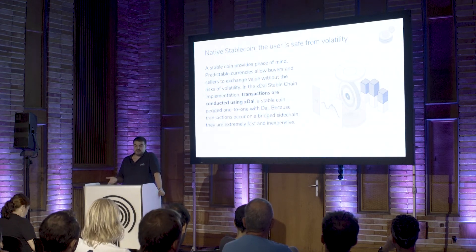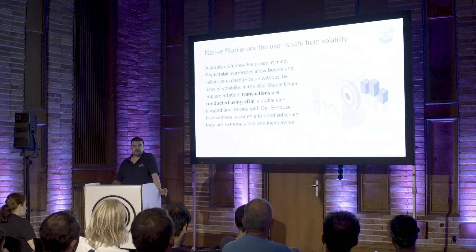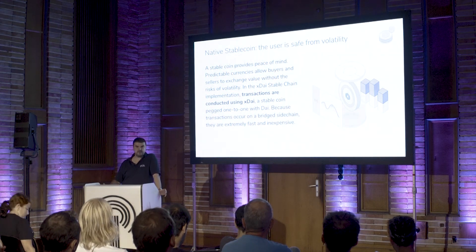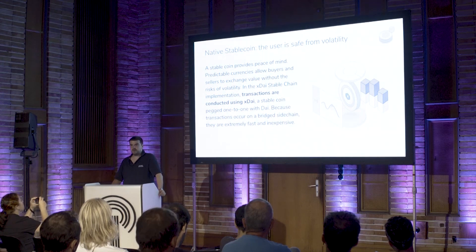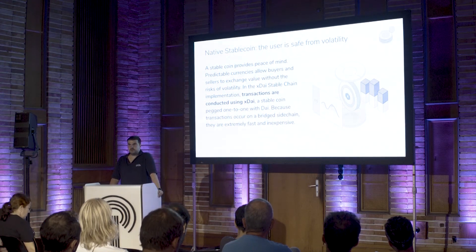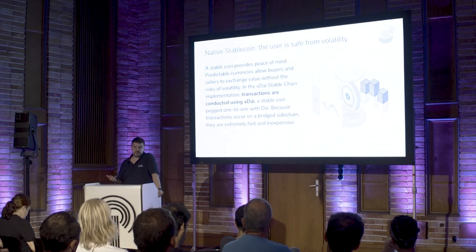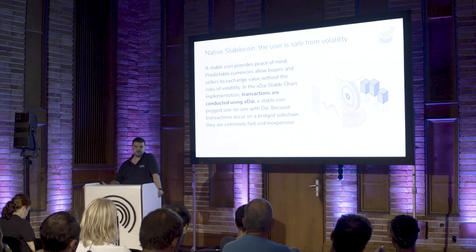Native stable coins are basically protected from volatility. When we think about DAI, today it's one DAI, tomorrow it will most likely be one DAI. It's not protected from black swan events — DAI can collapse because of protocol flaws — but it's quite protected from volatility. We are inheriting these stabilization mechanisms and making DAI more usable for some applications.